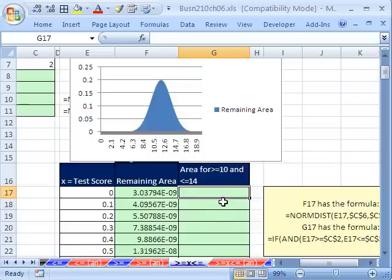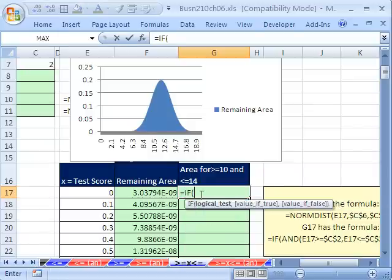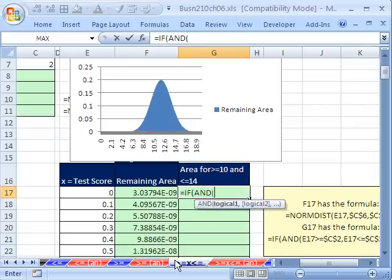The AND function will take any number of true/falses. And if they all come out to be true, then AND will deliver a true to the IF. So you ready? Equals IF. Logical test, before we've only had one, but now we have two. You type AND.